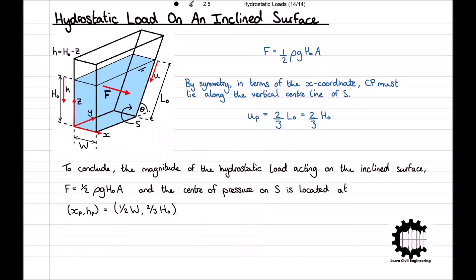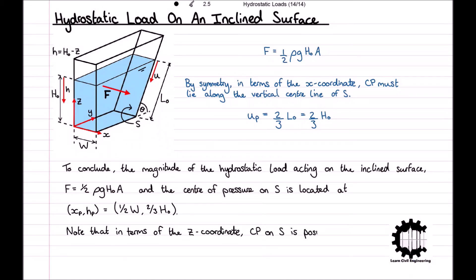This result is intuitive because the pressure does not vary horizontally across s, so we expect Cp to be positioned along the vertical centre line of s. However, the pressure does vary vertically across s. In particular, there is greater pressure acting on the bottom of the surface than at the top. Hence, we expect Cp to be positioned in the bottom half of s. Note that in terms of the z coordinate, Cp on s is positioned at xp, zp equal to one half w, one third h0.